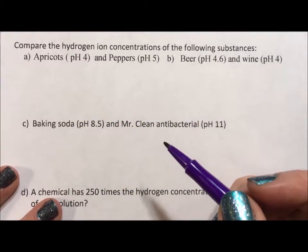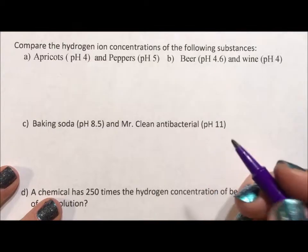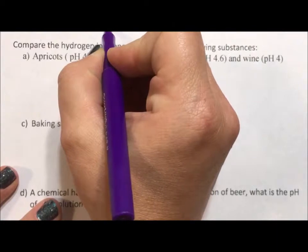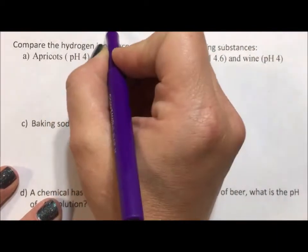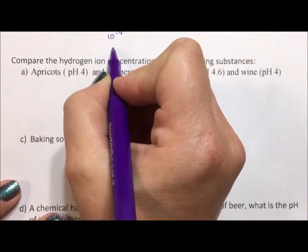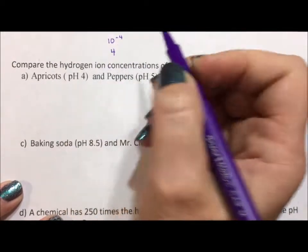So what happens is the ion concentration of a substance tells you how acidic or basic it is. So a hydrogen ion concentration of 10 to the negative 4 relates to 4 on the pH scale.